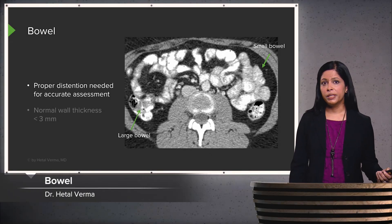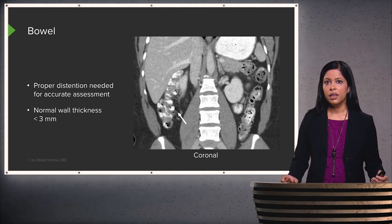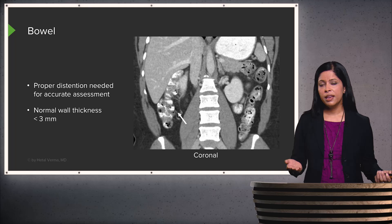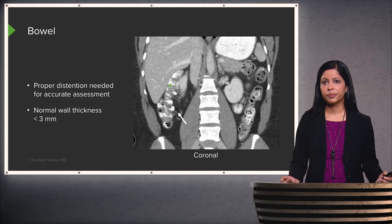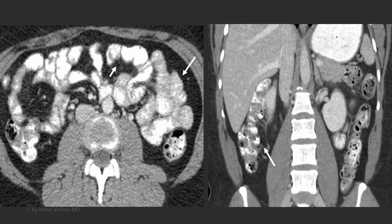When evaluating the bowel, proper distension is needed for accurate assessment. The normal bowel wall thickness is less than 3 millimeters. Areas that appear thickened may simply be due to incomplete distension from oral contrast or bowel peristalsis. When evaluating for true bowel wall thickening, look for other secondary changes such as surrounding inflammatory changes, and assess whether that portion of bowel is fully distended.